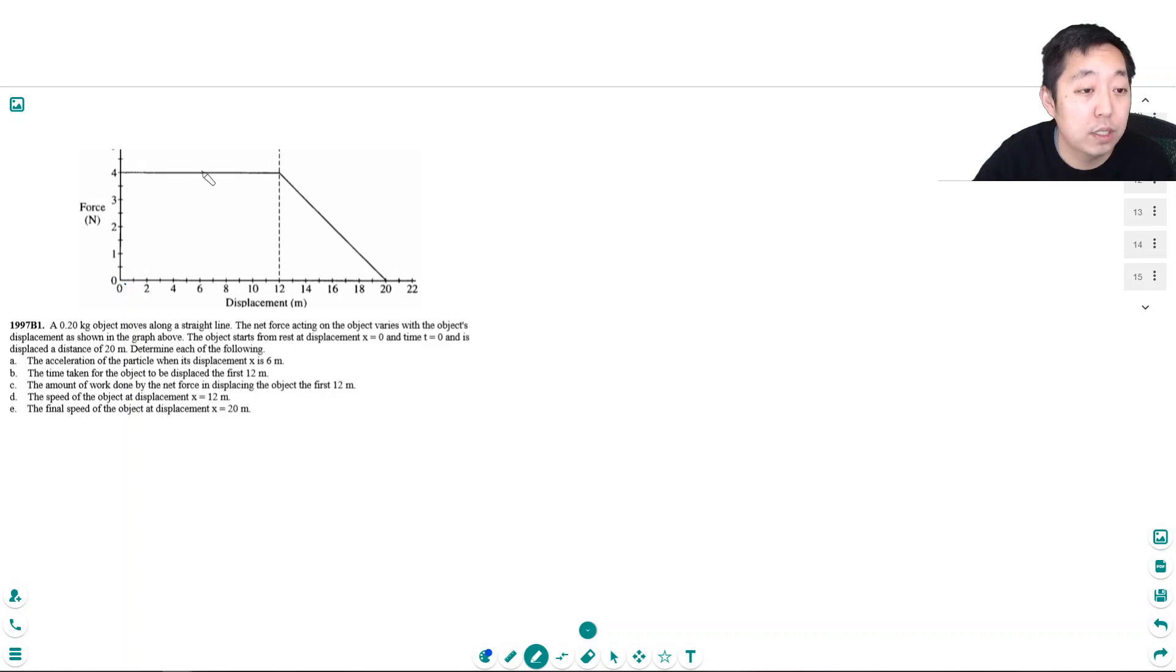At 6 centimeters, the force is equal to 4 newtons. We know that's equal to MA. So A is equal to 4 newtons divided by its mass. What is its mass? 0.2 kilograms. So that's equal to 20 meters per second squared. Okay, that's A.